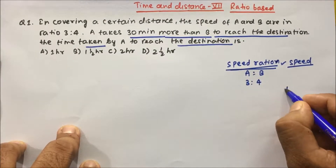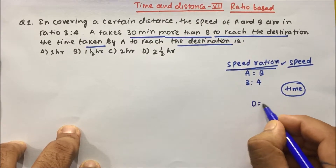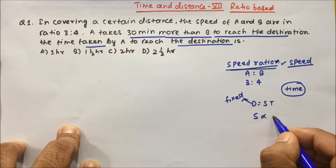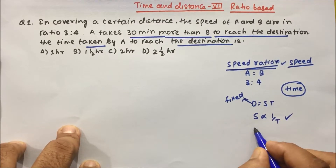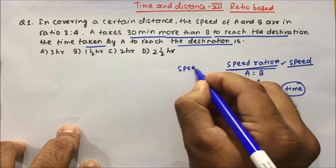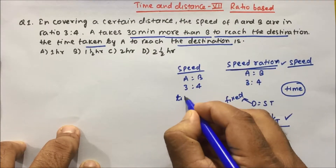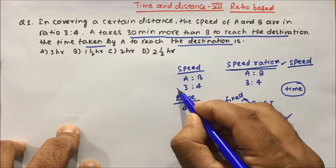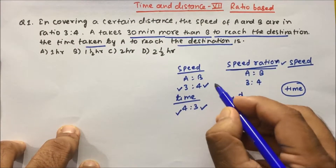So they have given the data in terms of speed and are asking in terms of time. We know the formula d = s × t. When distance is constant, speed becomes inversely proportional to time. So if A's speed ratio is 3 is to 4, then the time ratio will become 4 is to 3. If speed is less, you take more time; if speed is more, you take less time.